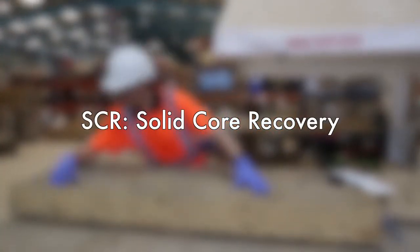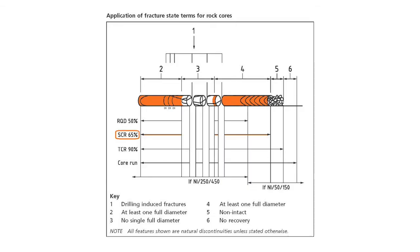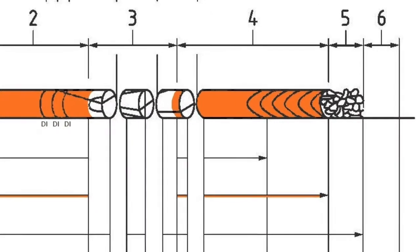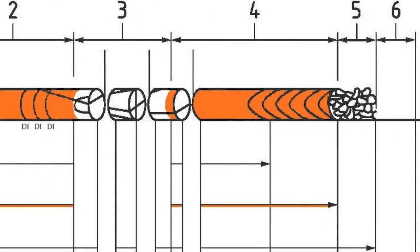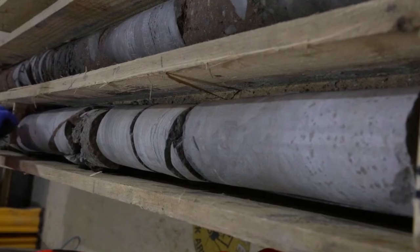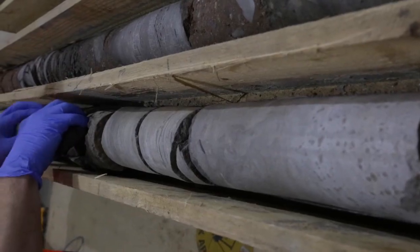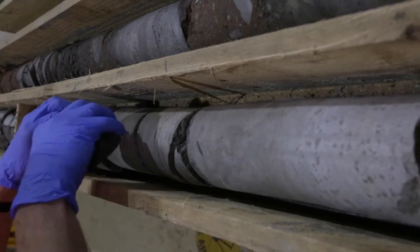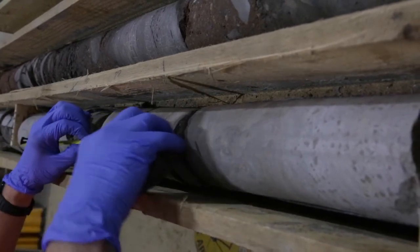Solid Core Recovery, SCR, is defined as the length of core that has a full diameter — not necessarily a full circumference — that is uninterrupted by natural discontinuities. By definition, any length of core that has a single set of inclined fractures will have a solid core recovery of 100%. Measurement of SCR applies to rock only and is expressed as a percentage of the core run length.